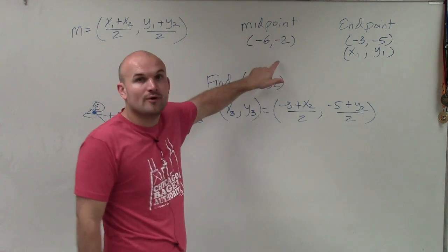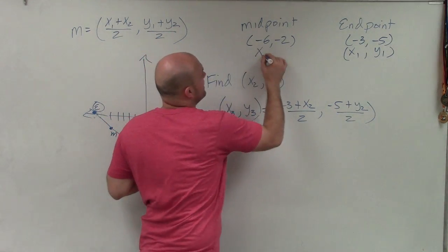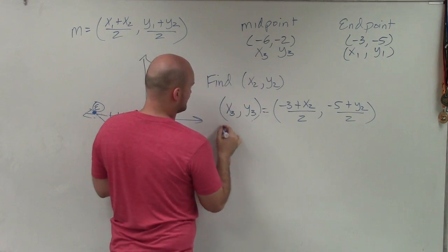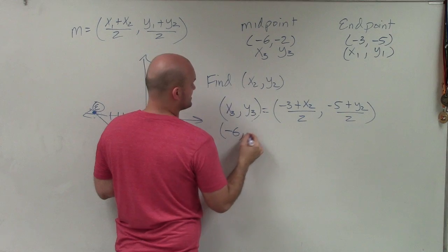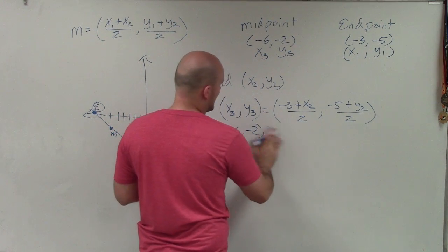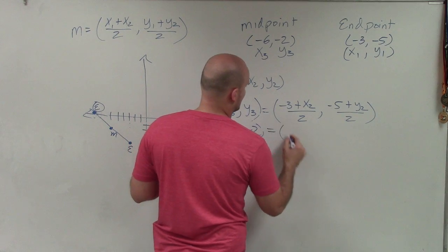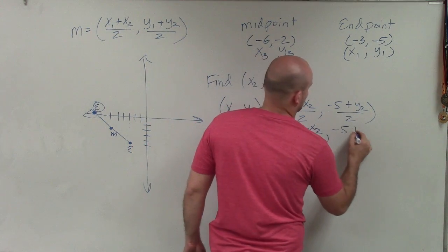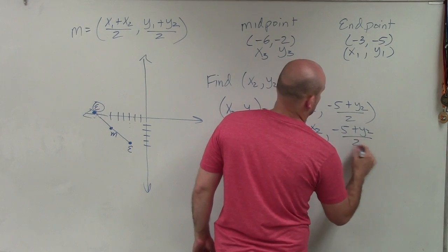So do I know the coordinates of the midpoint? Yes. So I can say here's x3 and here's y3. Let's plug in these values. (-6, -2). (-6, -2) is equal to all of this.